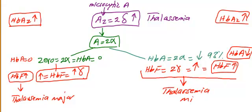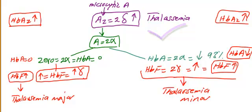To summarize: if hemoglobin A2 is increased, that means thalassemia. If hemoglobin A is decreased, that means thalassemia minor. If hemoglobin A is absent on electrophoresis, that is thalassemia major. If hemoglobin F is increased, it means either major or minor depending on the other hemoglobin constituents.